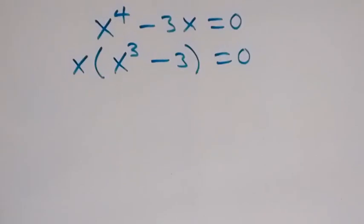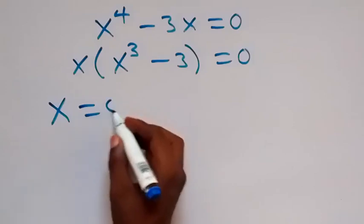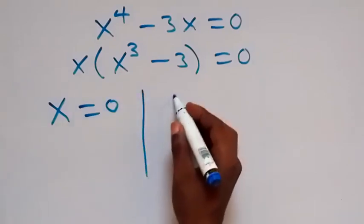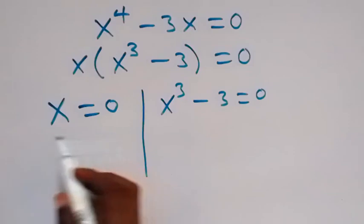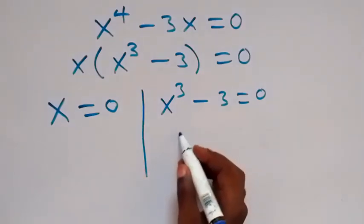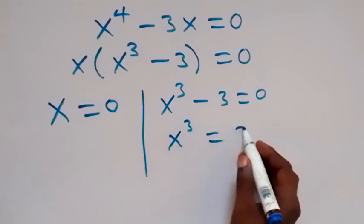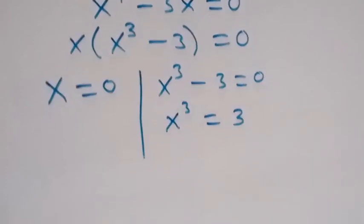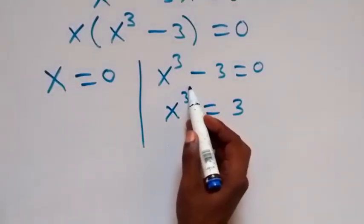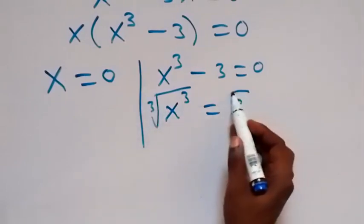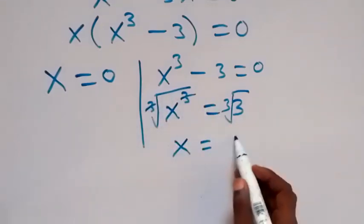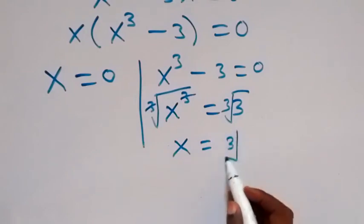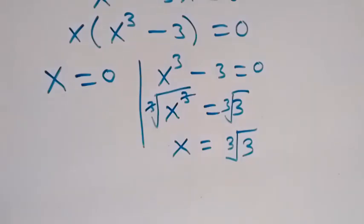This means we have two possible cases: x equals 0, or x³ minus 3 equals 0. From the second case, x³ equals 3. We take the cube root on both sides to cancel the power of 3, so x equals the cube root of 3.